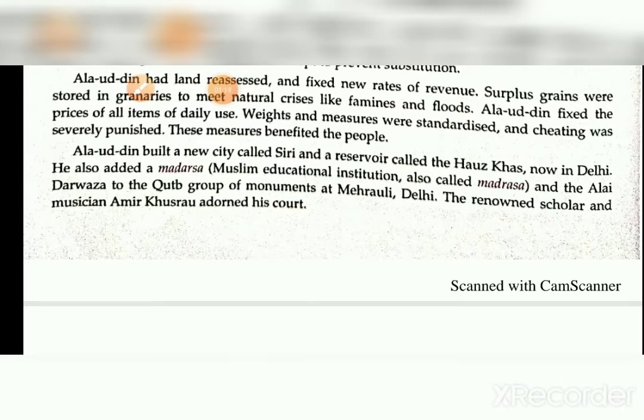He built a new city called Siri and made a reservoir called Hauz Khas. He also built a madrasa, which is a Muslim educational institution. A notable figure in his court was Amir Khusrau, a renowned scholar and musician who was a member of Alauddin's court.